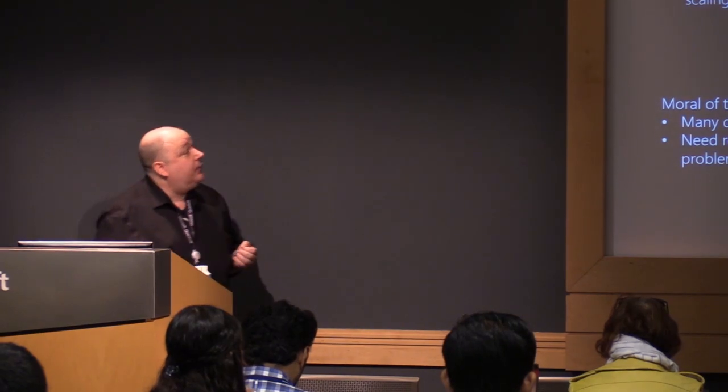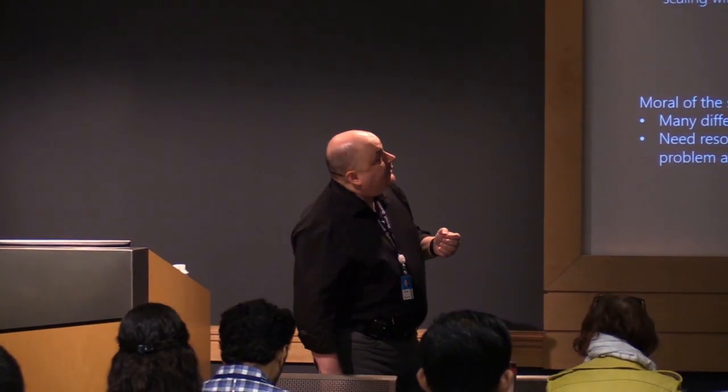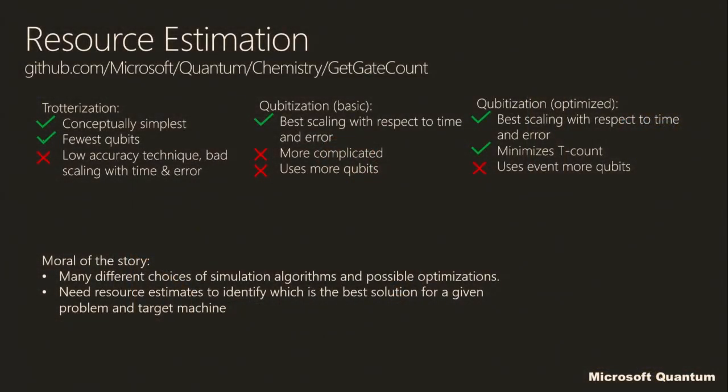Just a quick overview of what all of these do. Minimizes T-count — that's the optimized one. We can choose which are the best possible, and the answer varies on what you actually want to do. The choice for a small molecule might not be the same as for a larger molecule, so we have a workflow that's been designed to optimize this for all of the possible choices you might be interested in.